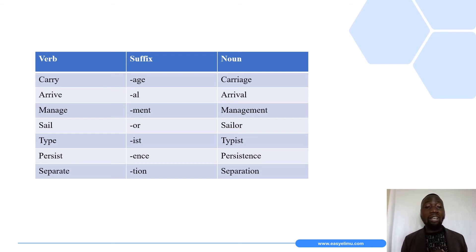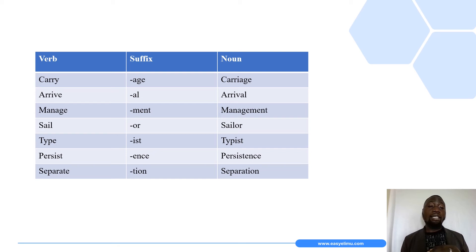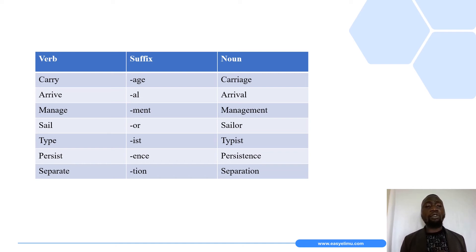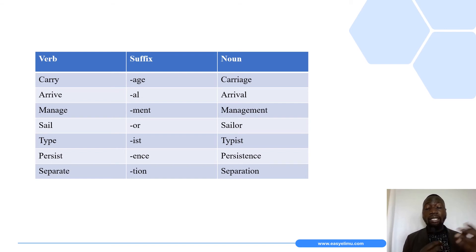There are more examples that follow other rules, with other suffixes that can be added to verbs to form different nouns — for example: carriage, arrival, management, sailor, typist, persistence, and separation. You can look at the suffixes that have been attached at the end of each base verb.